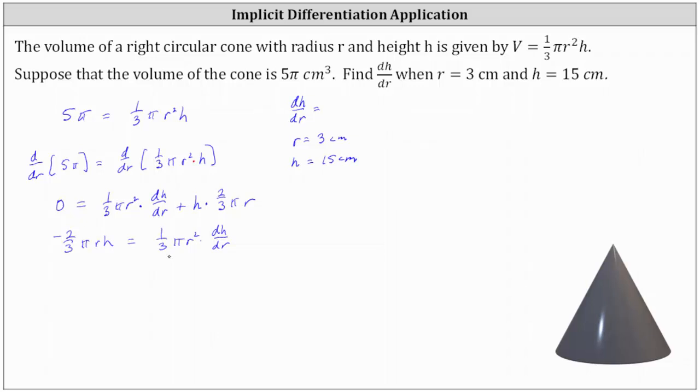And now to solve for dh/dr, we divide both sides of the equation by one-third π r squared.